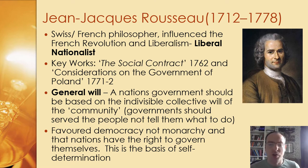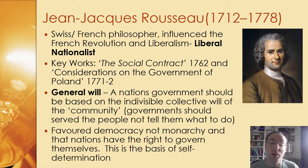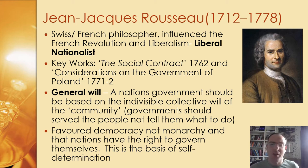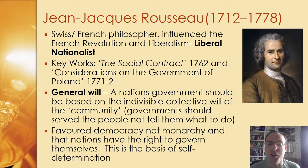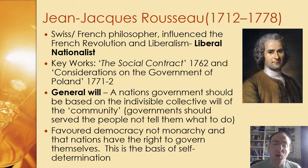The government should serve the people and do what the people tell the government to do, rather than the other way around, which had generally been the case with governments up until that point, with hereditary monarchies and things like that. There is this extra element of collective will — the idea that the people of the nation are going to want the same thing. So he favoured democracy, not monarchy.